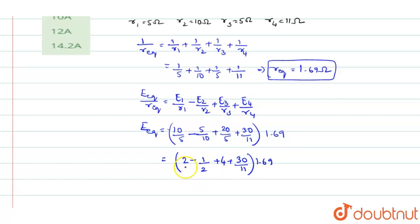Now this when you simplify it, you will get it as 2 minus 1 by 2 plus 4 plus 30 by 11 into 1.69. And so here 0 plus 2, you have 6, 6 minus half, that is half is 0.5, so it will be 5.5 plus 30 divided by 11 gives you 2.727 into 1.69. So that gives you E equivalent as 13.904 volt. So this is the equivalent EMF you have.